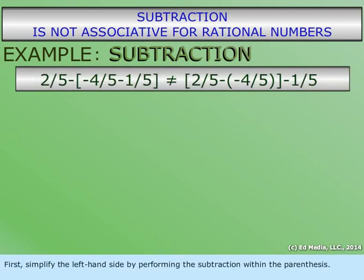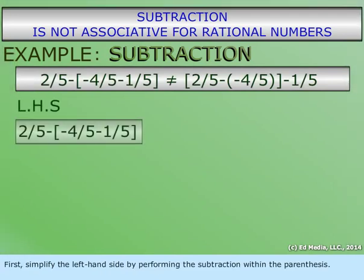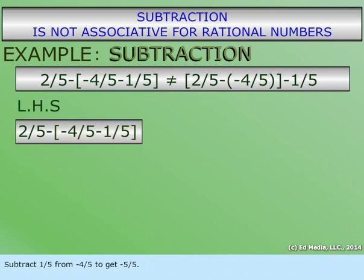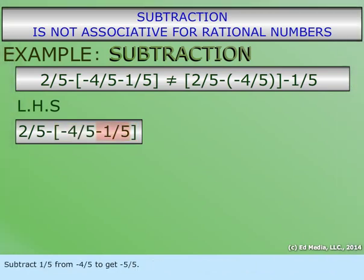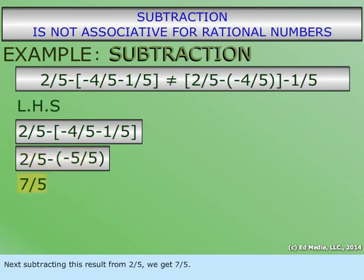First, simplify the left-hand side by performing the subtraction within the parentheses. Subtract one-fifth from negative four-fifths to get negative five-fifths. Next, subtracting this result from two-fifths, we get seven-fifths.